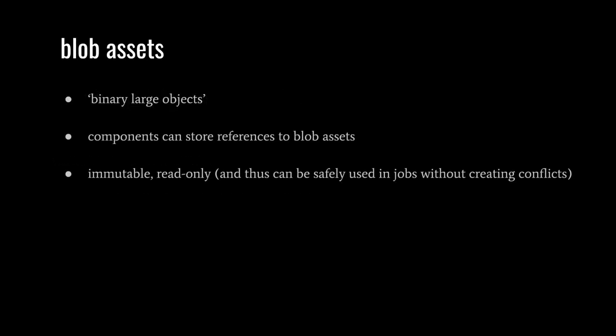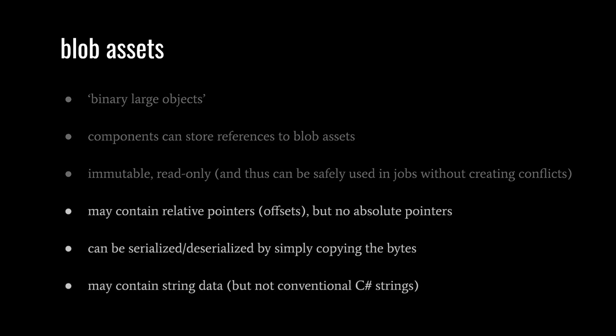The term blob is an acronym for binary large object. A blob asset in ECS is not actually an asset in the usual Unity sense — blob assets are not necessarily stored as files and currently aren't imported into the asset database. Instead, blob assets are simply immutable blobs created in memory that can be referenced from components. Because they're immutable, they can be safely used in jobs without any concern for conflicts. While these blobs cannot contain any absolute pointers (i.e., memory addresses), they can contain relative pointers (i.e., offsets). Because they contain no absolute pointers, blobs can be trivially serialized and deserialized by simply copying the bytes verbatim. Strings can't be stored directly in regular components, but one workaround is to have components reference blobs which store the needed string data.